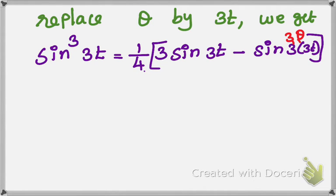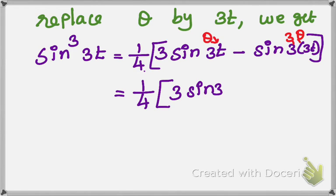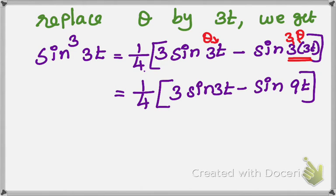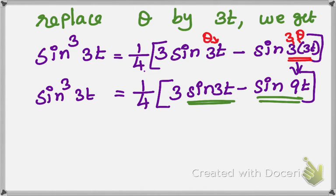So sin³(3t) = 1 by 4 into (3 sin 3t − sin 9t). Now apply the Laplace transform on both sides.